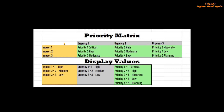How we can read this particular Priority Matrix: you can see there is Impact 1, Impact 2, Impact 3. The actual display values are — Impact 1 equals 1 High, Impact 2 equals 2 Medium, Impact 3 equals 3 Low. For Urgency 1, Urgency 2, Urgency 3, the same values apply: 1 High, 2 Medium, 3 Low. For priority, 1 through 5, the display values are: 1 Critical, 2 High, 3 Moderate, 4 Low, and 5 Planning.